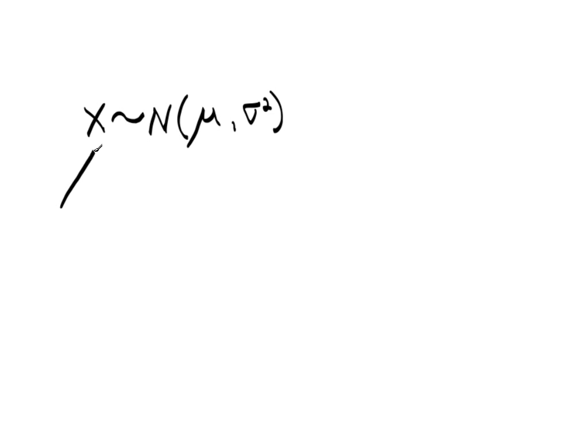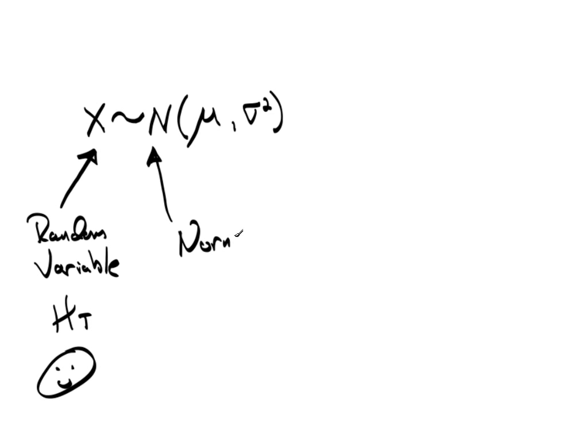Now this is standard notation. This right here, this X, is the random variable. So I used X, it could be Y, it could be Z, it could be height, it could be smiley face. Whatever your variable is, it doesn't really matter. This is the random variable. This tilde means distributed as, and the N means normal.